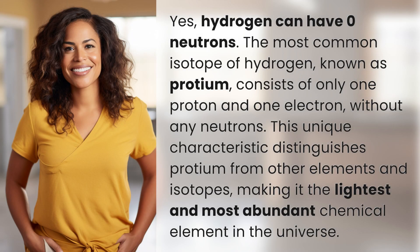Yes, hydrogen can have zero neutrons. The most common isotope of hydrogen, known as protium, consists of only one proton and one electron, without any neutrons. This unique characteristic distinguishes protium from other elements and isotopes, making it the lightest and most abundant chemical element in the universe.